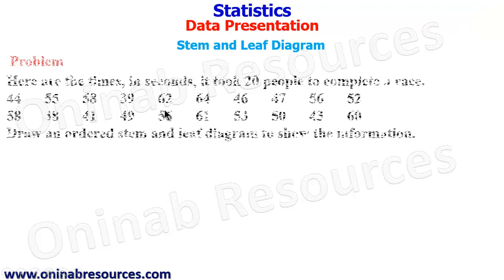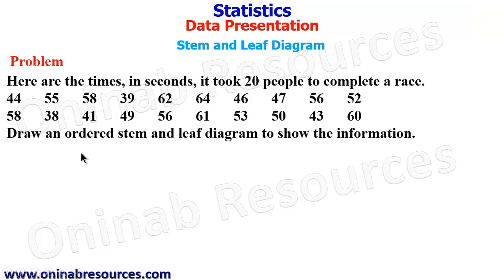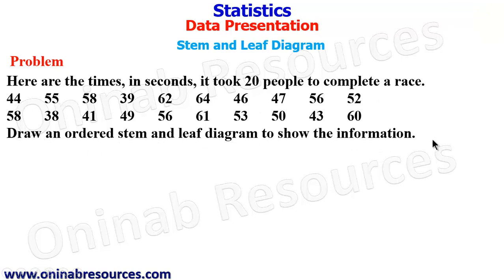We have our problem here. Here are the times in seconds it took 20 people to complete a race. We have the time in seconds here. Draw an ordered stem and leaf diagram to show the information.